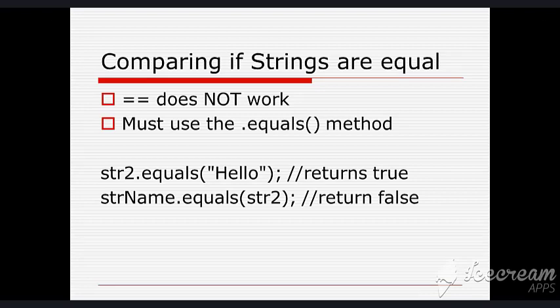In Java, if you want to equal two strings, we have to use the dot equals method. Like in this example, we are writing String str2.equals("Hello") returns true. It will return true. If you want to type like this, strName.equals(str2), it will return false.